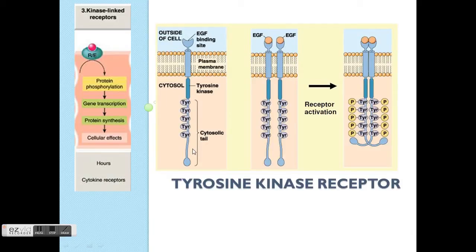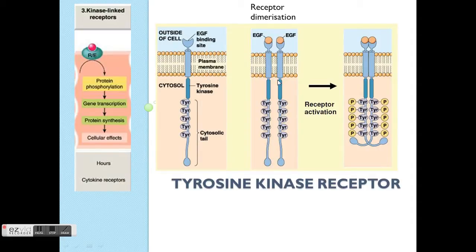For this group of receptors, remember it's only one single chain. So for it to produce a strong effect on activation, the binding of the ligand — in this case called EGF — to the receptor will cause dimerization of tyrosine kinase receptors. For tyrosine kinase receptor activation, it must undergo dimerization.